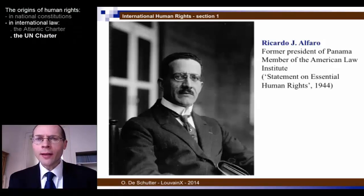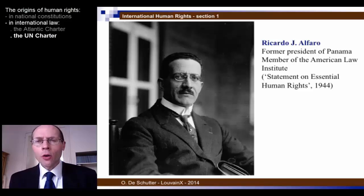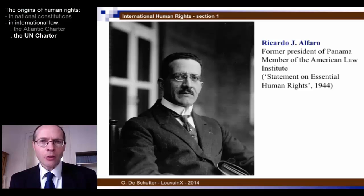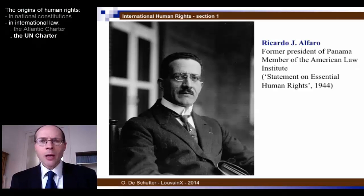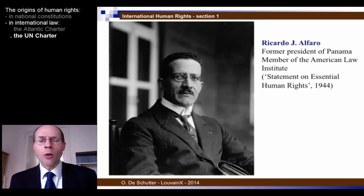What is perhaps strange is that the UN Charter does not itself define what human rights are — it does not provide any catalogue of human rights. In the course of discussions leading to the Charter, some proposals were made to include such a catalogue, particularly the work of the representative of Panama, Ricardo Alfaro, who had been president of Panama in 1930–1932 and later became a judge at the International Court of Justice. At the San Francisco conference, he put forward a proposal inspired by the American Law Institute's 1944 statement on essential human rights, to include a list of human rights in the UN Charter.